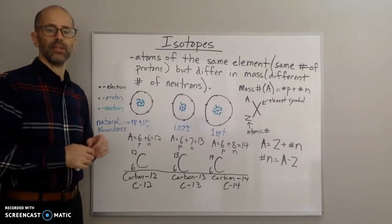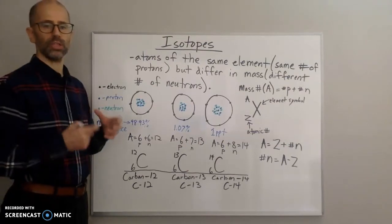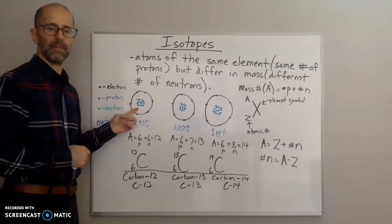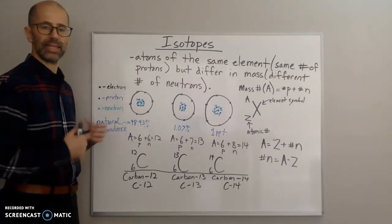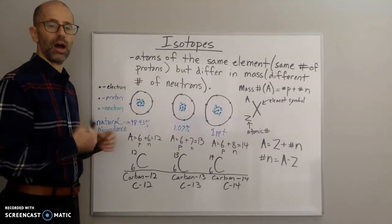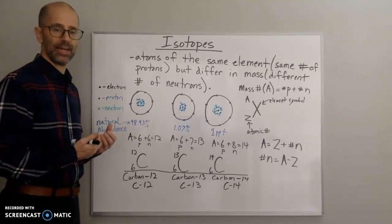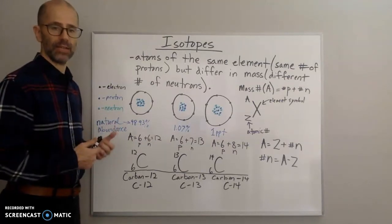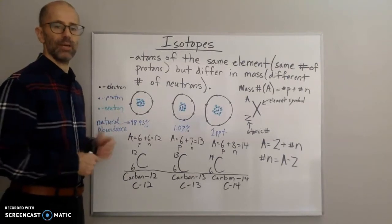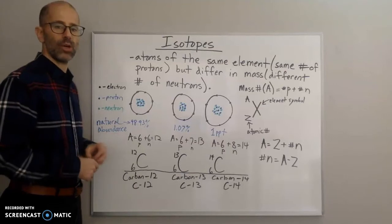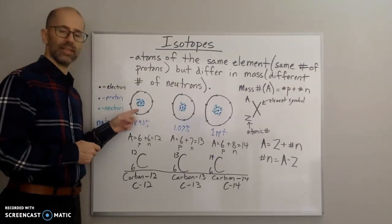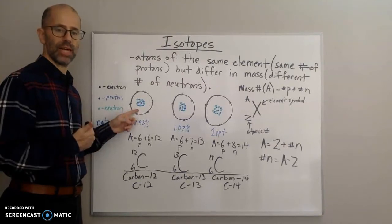That means isotopes differ in the number of neutrons they have. Most of the mass is in the nucleus. Here we have our carbon atom — the center of the atom is called the nucleus, and in the nucleus we have protons and neutrons. The protons and neutrons are about 2,000 times greater in mass compared to the electron, so the electrons are really negligible when considering the mass of the atom.